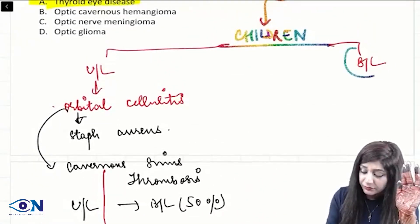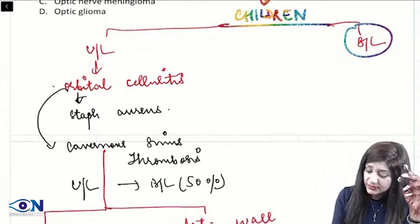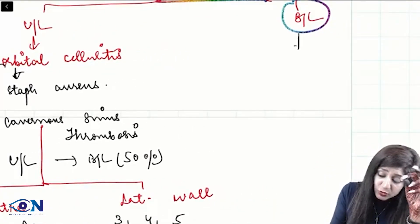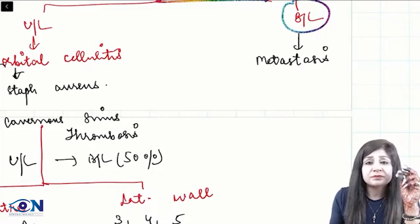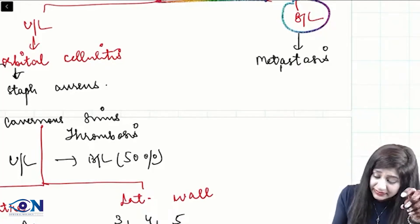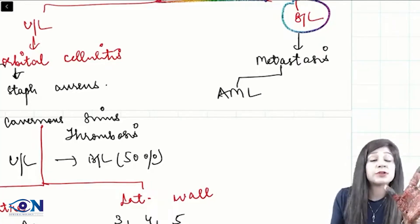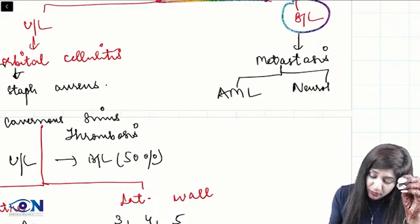Bilateral proptosis in children is mainly due to metastasis — an alarming signal to think about a tumor. The metastasis is usually from AML or chloromas, so leukemias, or it can be neuroblastomas.